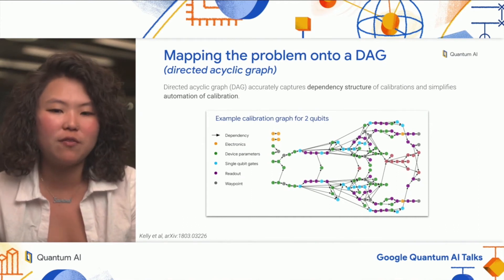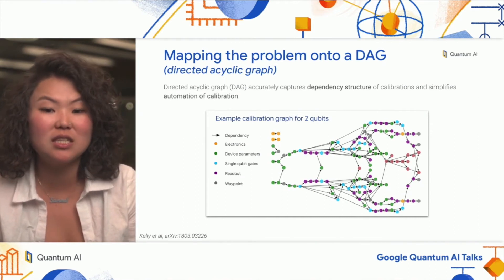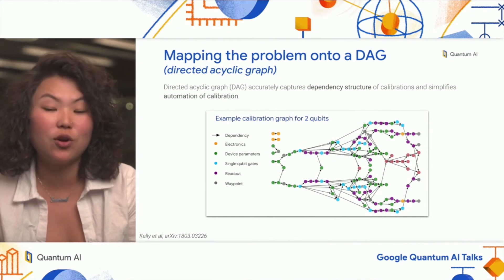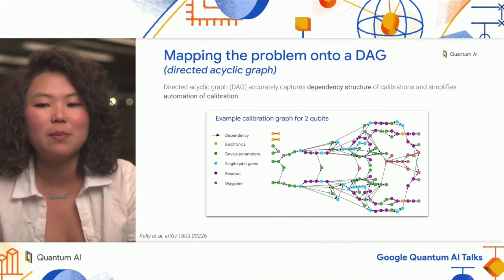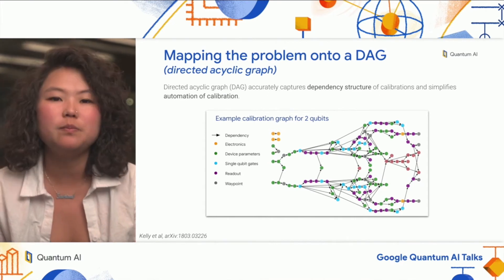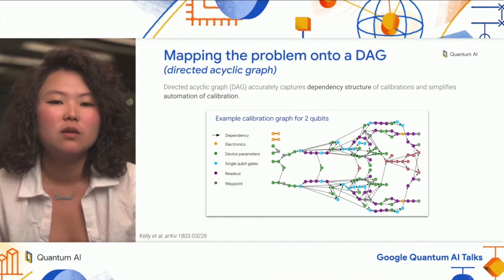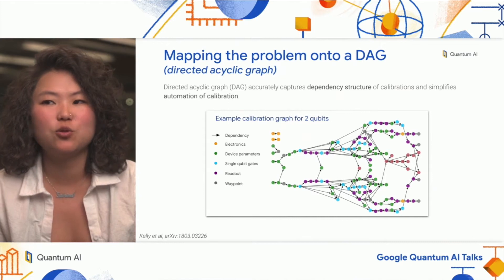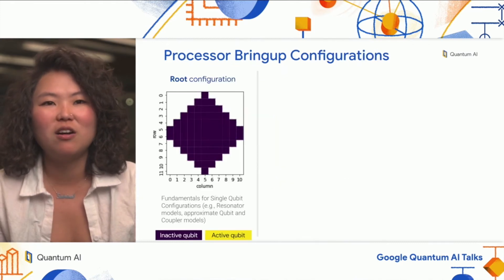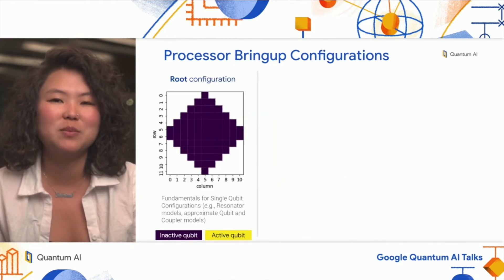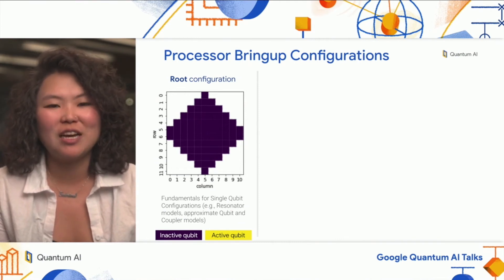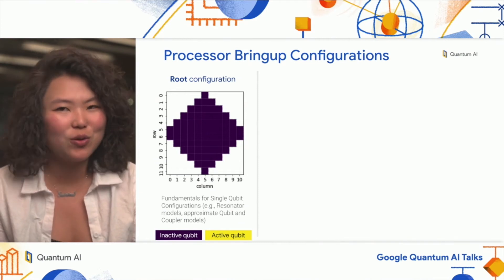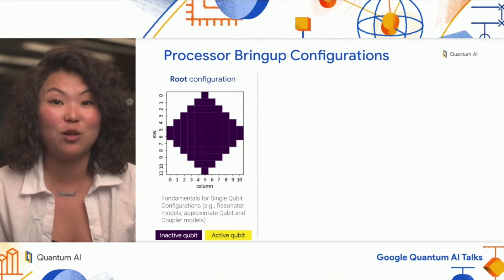Looking at this calibration graph, this is an example for just two qubits, where each circle is a calibration node. You can imagine inserting a new calibration type into this graph pretty easily. In addition to bootstrapping individual calibrations, we rely on different device configurations to calibrate different parameters of the device. Each configuration contains its own calibrations that get mapped onto this calibration graph.